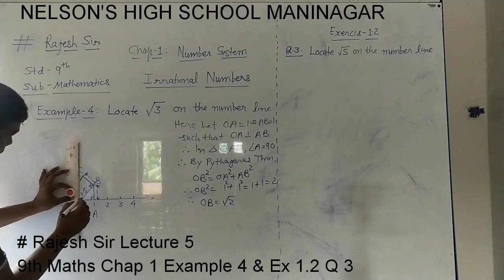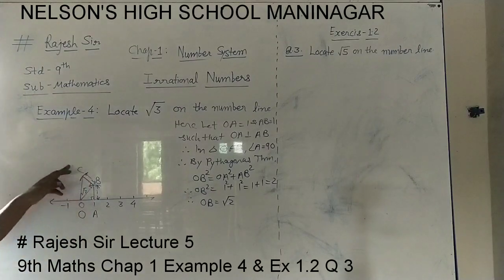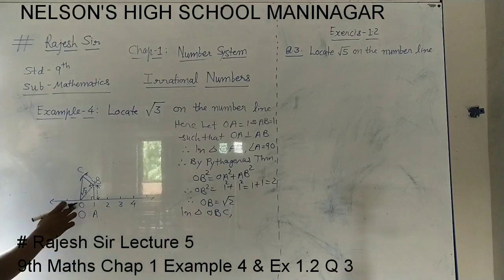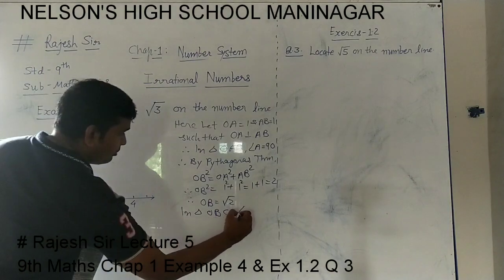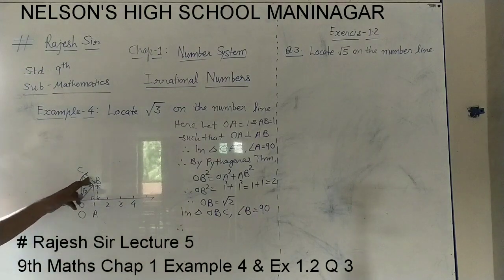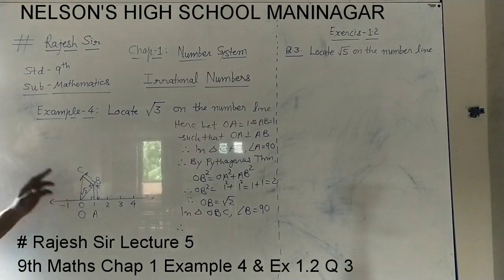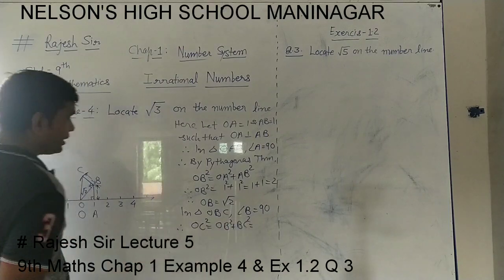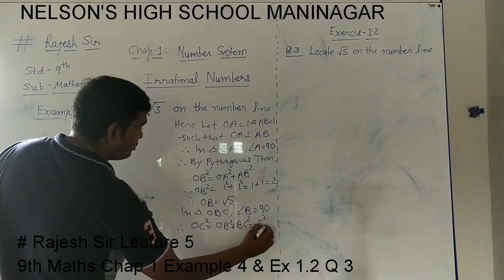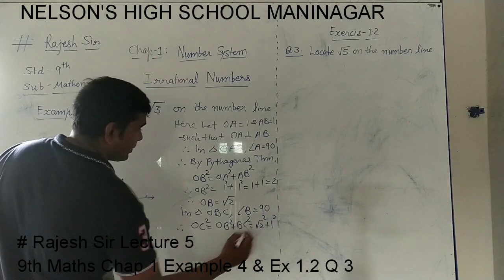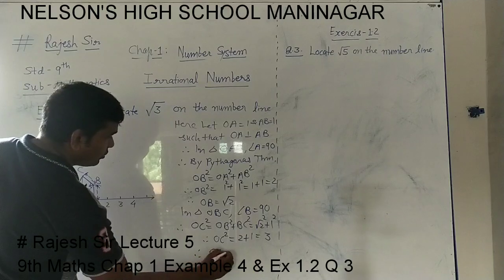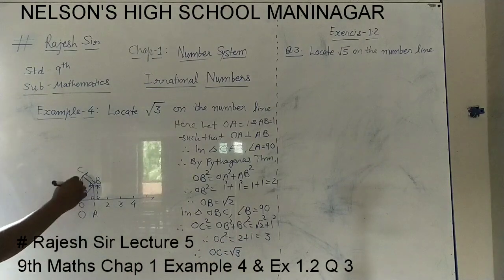If we join O to C, triangle OBC is also a right angle triangle with the right angle at B. By the Pythagoras theorem: OC² = OB² + BC² = (√2)² + 1² = 2 + 1 = 3. Therefore OC² = 3, so OC = √3. This OC length is showing us root 3.